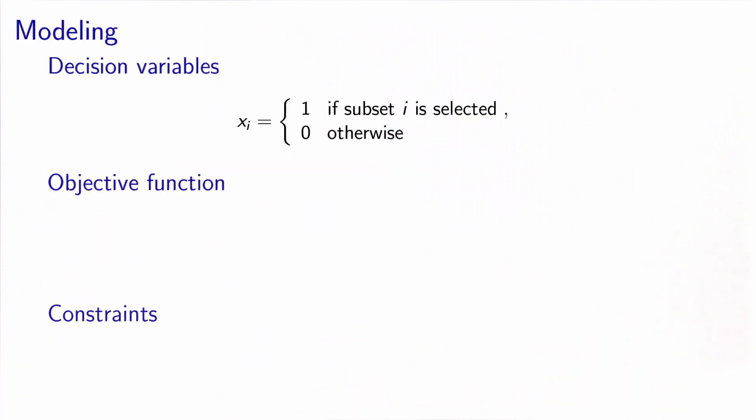In order to model it as a mixed integer linear problem, we need to do three things: define the decision variables, define the objective function, and define the constraints.